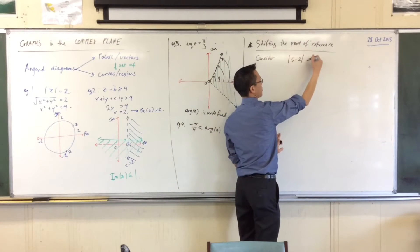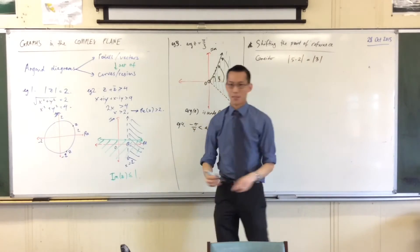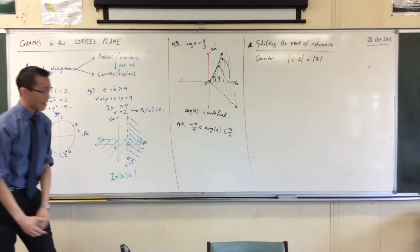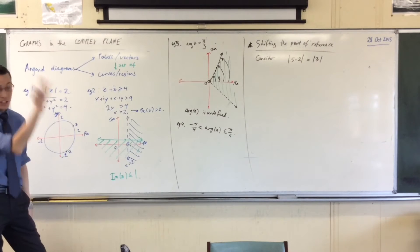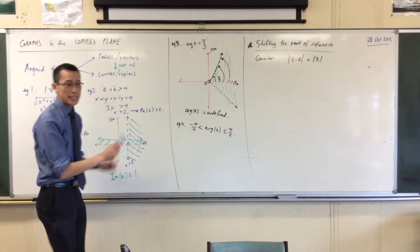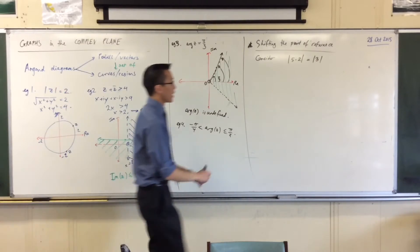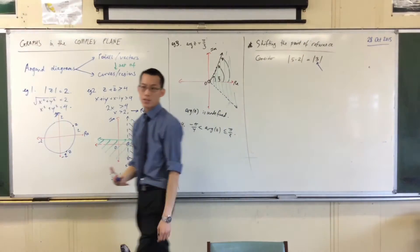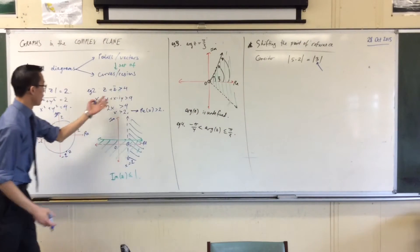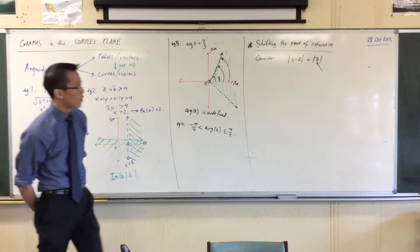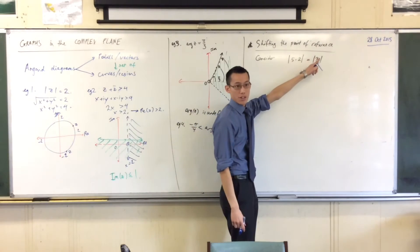The absolute value of 5 minus 2 is the absolute value of 3. Now, this doesn't look like it's saying anything profound. We're just crunching numbers, like 5 take away 2 is 3. But this is actually saying something different. For instance, remember that the absolute value of something, the modulus of something, just means how far are you from the origin? Or rather, how far is that from the origin?